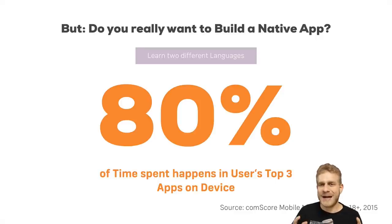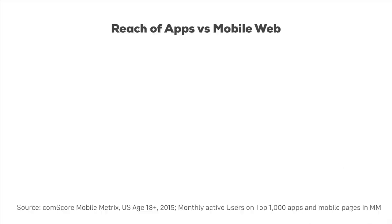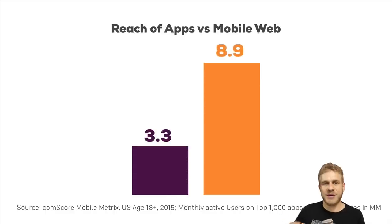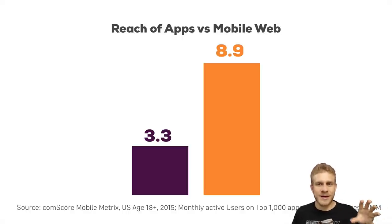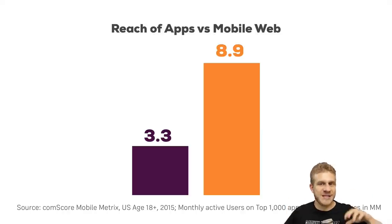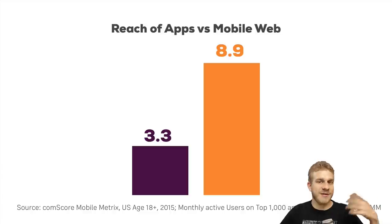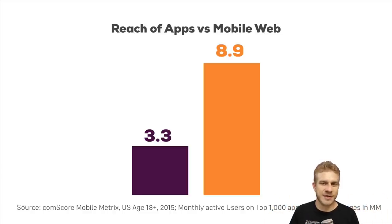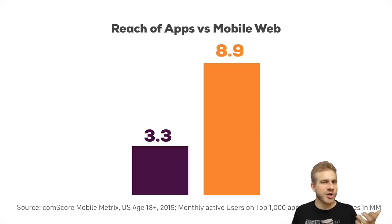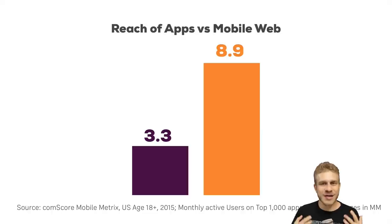That makes it clear the web has something big to offer — reach. The top thousand native apps have 3.3 million users; the top thousand web pages visited from mobile have 8.9 million. So even though less time goes towards the web, more people are visiting it. We can reach a broader audience. People spend a lot of time in native apps but always in the same apps. On the web, you don't need to install anything. You search for something, Google shows the result, and you're on the web page. It's so much easier to access.